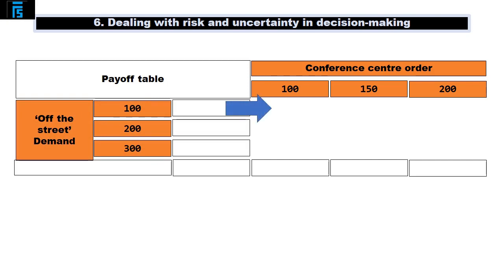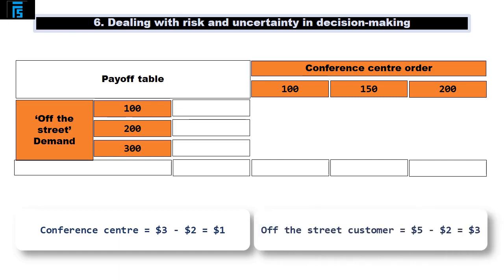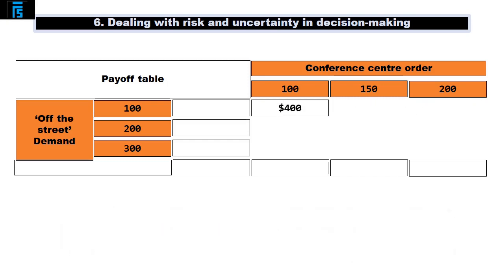For example, if we're in this box, then Jack has agreed to sell 100 sandwiches to the conference centre, and has 100 sales to off-the-street customers. A conference centre sandwich earns $3 less $2, which is $1 per sandwich, whereas a sale to an off-the-street customer earns $5 less $2, which is $3 per sandwich. This generates a contribution of 100 × $1 plus 100 × $3, which is $400.